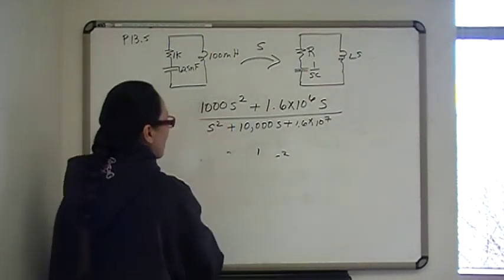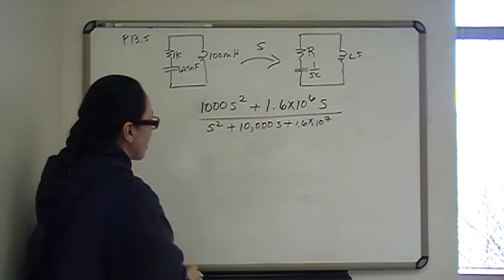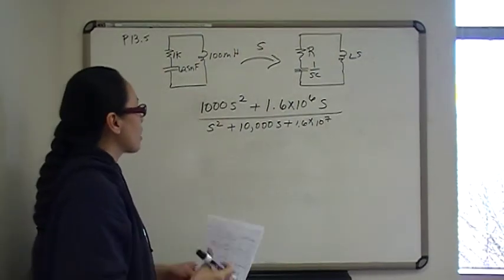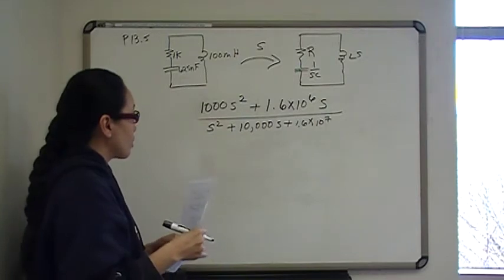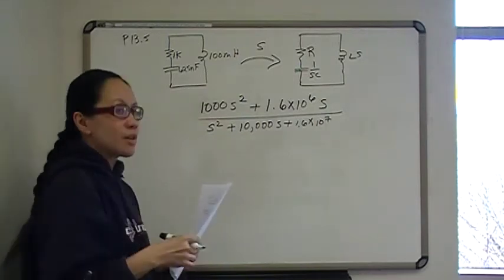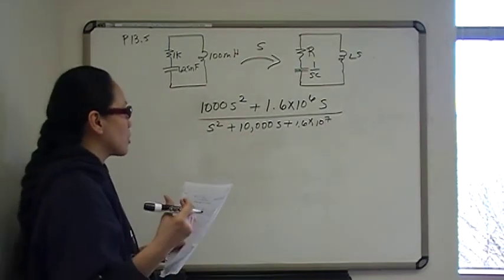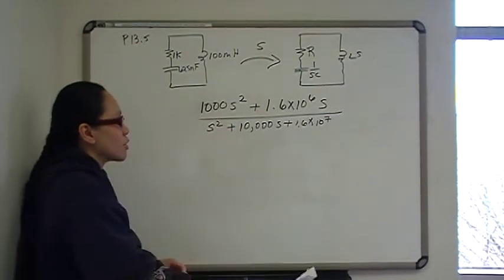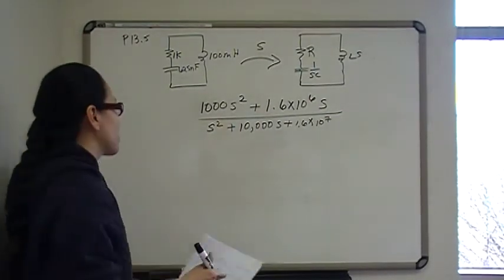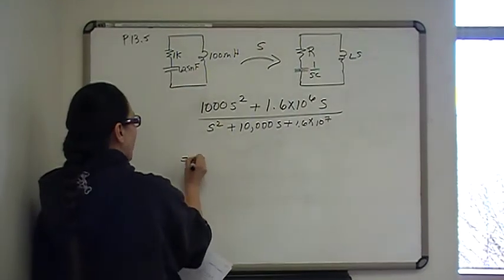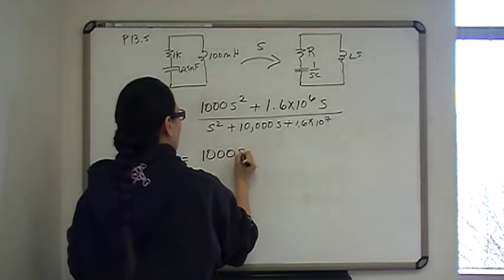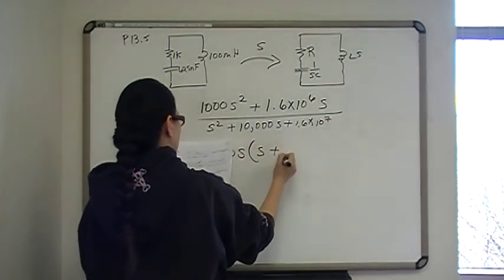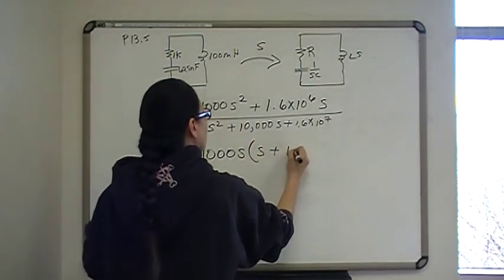Okay, now you will always factor out the top, because that's how you find your zeros. Zeros are the numerator, where the numerator is zero, and poles are where the denominator is zero. So you're always going to factor the top as much as you can, and you'll also always factor out the denominator as much as you can.